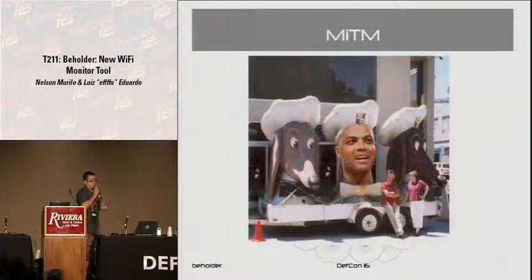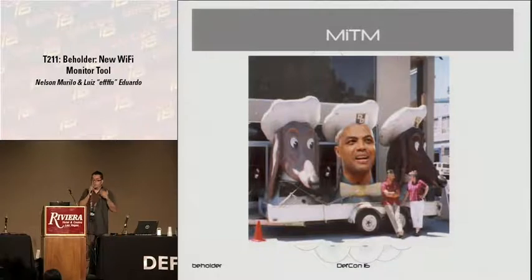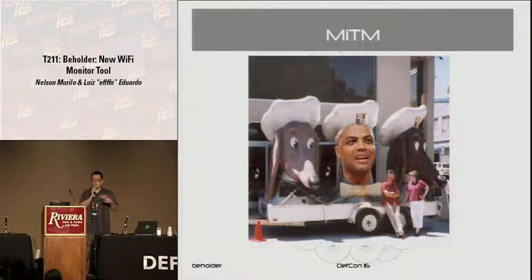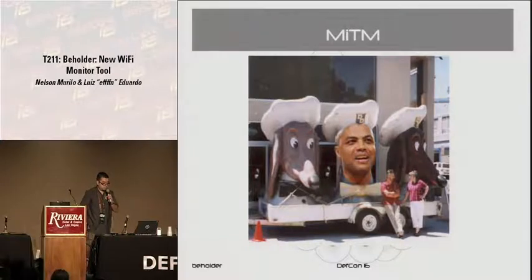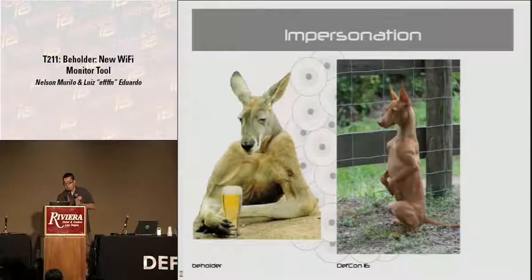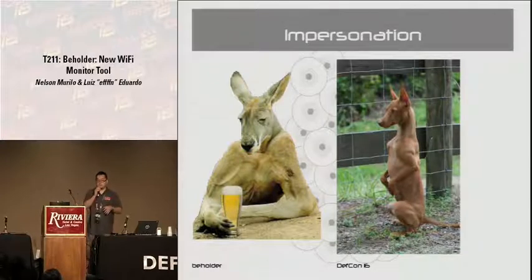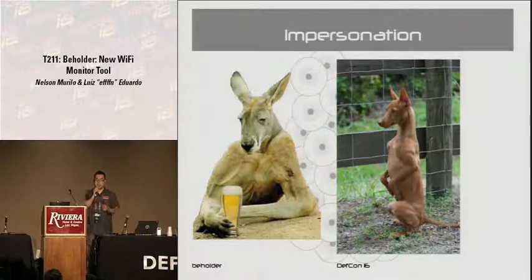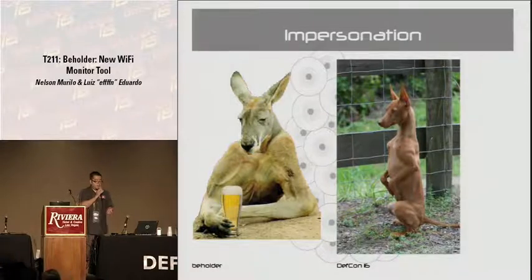Man-in-the-middle attacks are usually used in combination with some sort of DOS attack or packet injection. You have a client connected to a valid access point — you want the password from that guy at Starbucks — you run your laptop, do a man-in-the-middle, and steal whatever you want if the guy doesn't use encryption. Then people thought, 'Let's put encryption on,' and it gets a little harder.